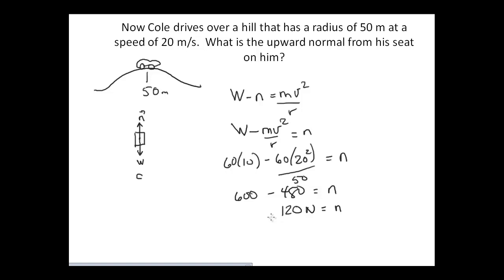We could have done this problem about the food in Cole's stomach, which is also going over the hill. At that moment, the food in his stomach weighs less than it normally does, so the stomach doesn't have to push it upward to support it. The nerves sense this reduction in force, and that is why you get that very strange sensation as you go over the top of a hill.